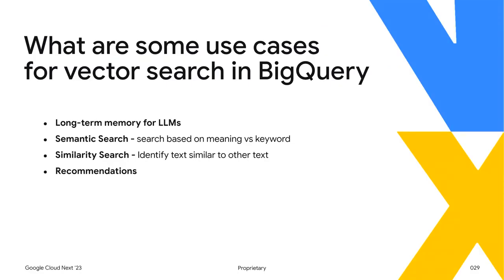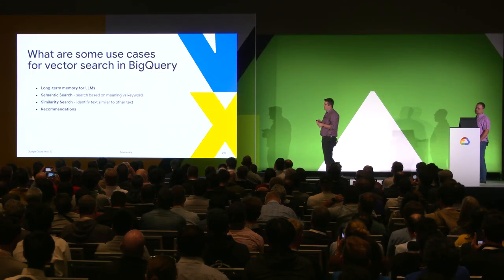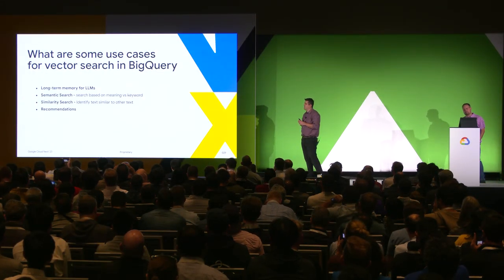What are some use cases for vector search? It's good for long-term memory — it's expensive and processing-heavy to create a bunch of vectors, so you want to keep them stored in BigQuery. That way, if you have other algorithms you want to run, you don't have to regenerate the embeddings. Semantic search is also a very big building block, especially paired with things like a k-means model, which we also support. And of course, recommendations — find me some more things like this.